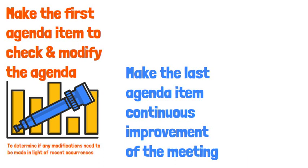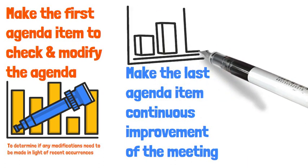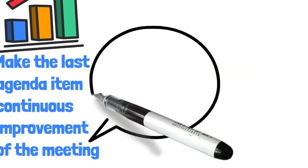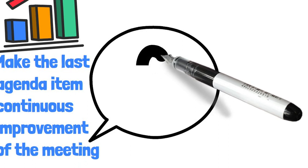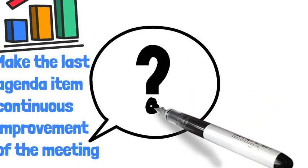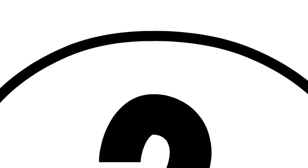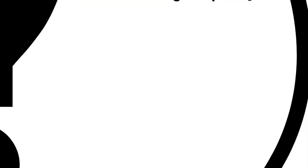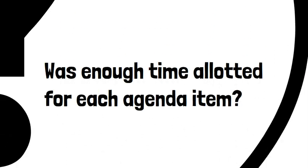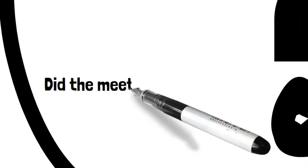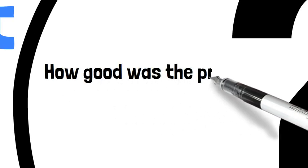Eleventh, make the last agenda item the continuous improvement of your meeting. For a regular meeting, this can be achieved by asking two questions: What accomplishments were made? And what do we hope to change for the next gathering? Investing a few minutes will help the meeting become more efficient, enhance collaboration and improve attendee satisfaction. Ask participants: Did the agenda get distributed early enough? Did participants prepare adequately? Was enough time allotted for each agenda item? How well was time allocated for decision-making and discussion? Did the meeting stay on track? How good was the process for each agenda item?